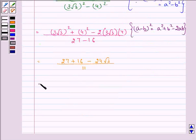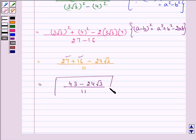So we have the answer, the required answer now as 27 plus 16 gives us 43, we have minus 24 root 3 with it upon 11, and this is the required answer to the fourth and final part.